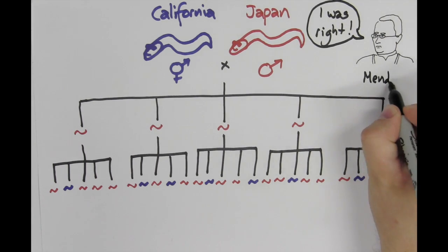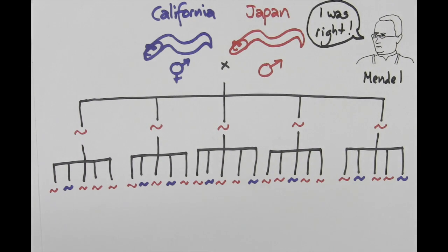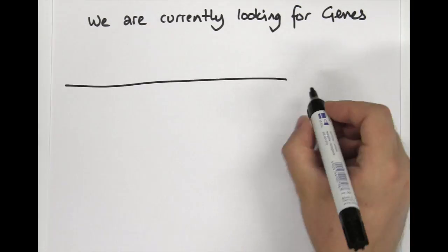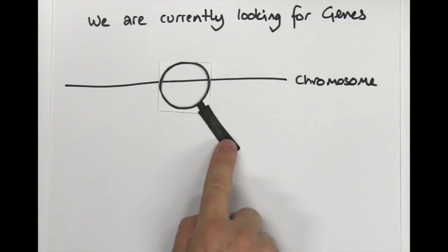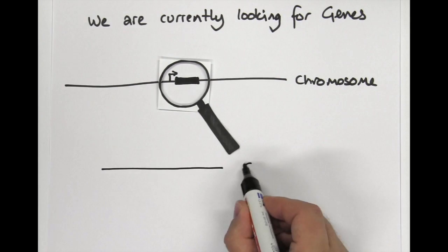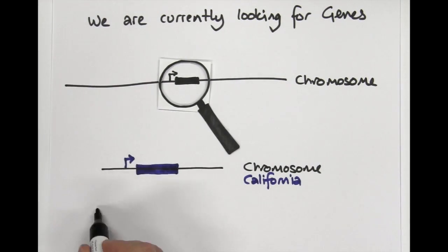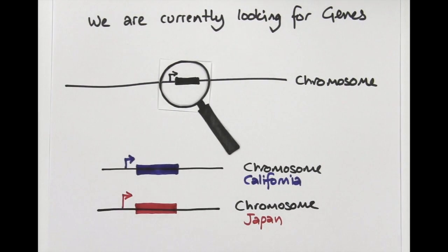This means that there is likely to be one gene or a cluster of genes that controls fertility at 30 degrees and that this gene is different in the two strains. We are now currently working hard to identify what the gene is.